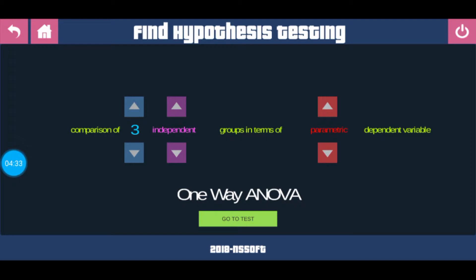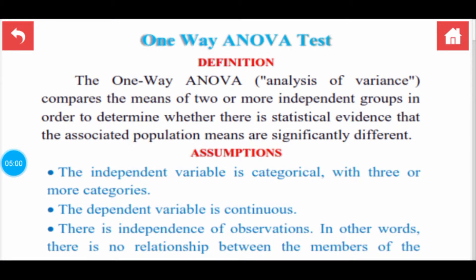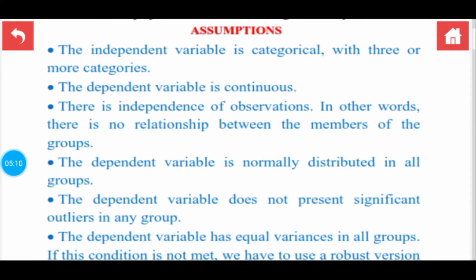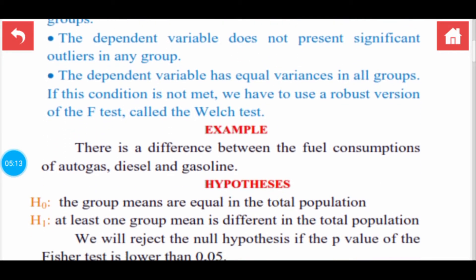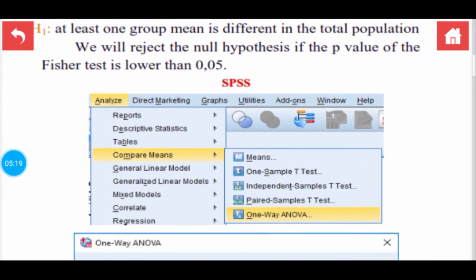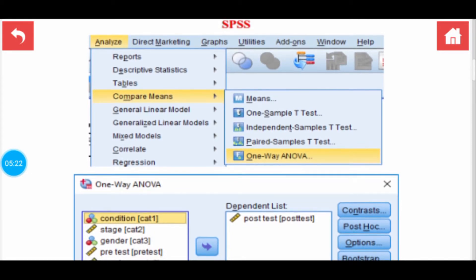Now you have selected the test. Just below the test you can see a green button — click on that green button and it will take you to the test details. Here you can see the definition of one-way ANOVA. Below that definition you have the assumptions required for the test. Below that they have given an example, a hypothesis, and also they show you how to perform this test in SPSS. That is the most valuable thing about this application — it tells you how to use this test in SPSS.